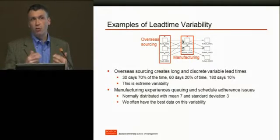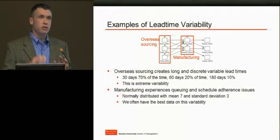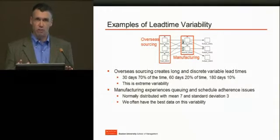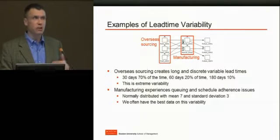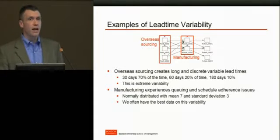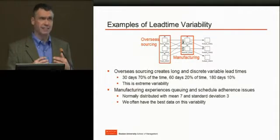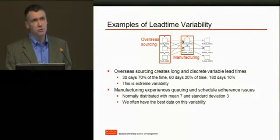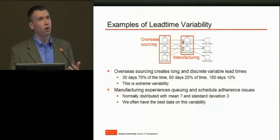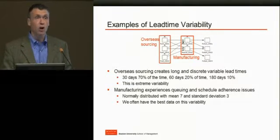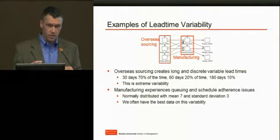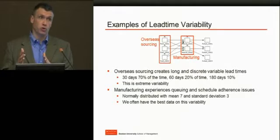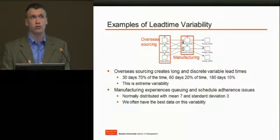In the middle of the process where we're manufacturing or assembling something, this is actually the most straightforward variability in the system. This lead time is typically due to schedule adherence or simple queuing effects, but it's also the lead time we tend to understand the best. Something like: it takes seven days, normally distributed with a standard deviation of three days — that would be typical lead time variability in this manufacturing part of the operation. We also often have the best data on this part because we control this portion the best.